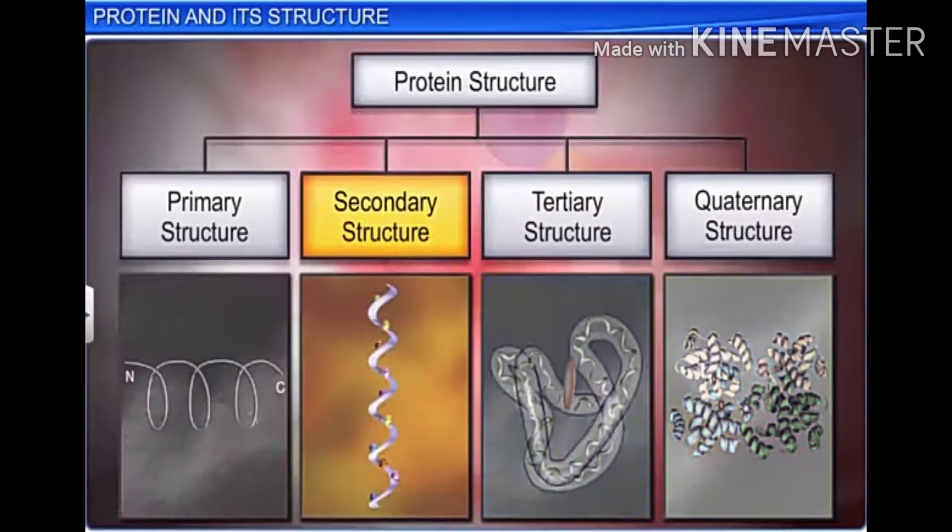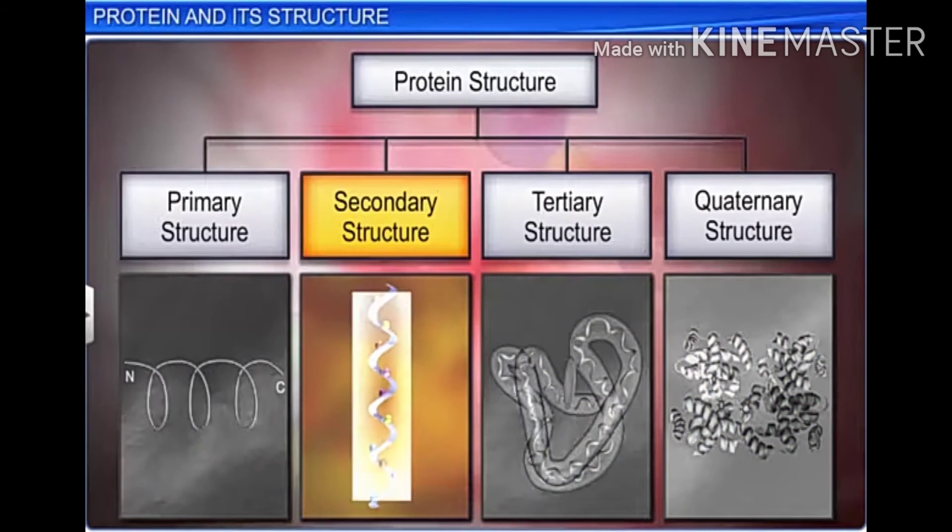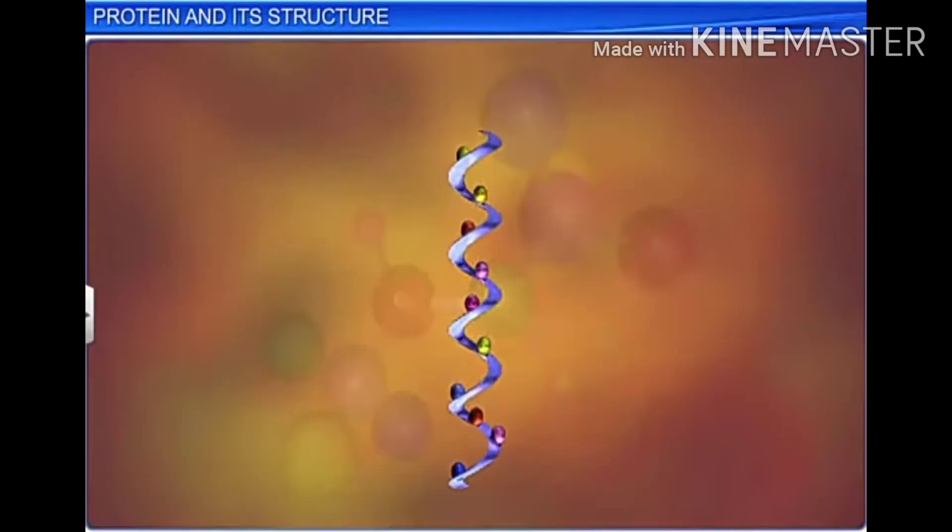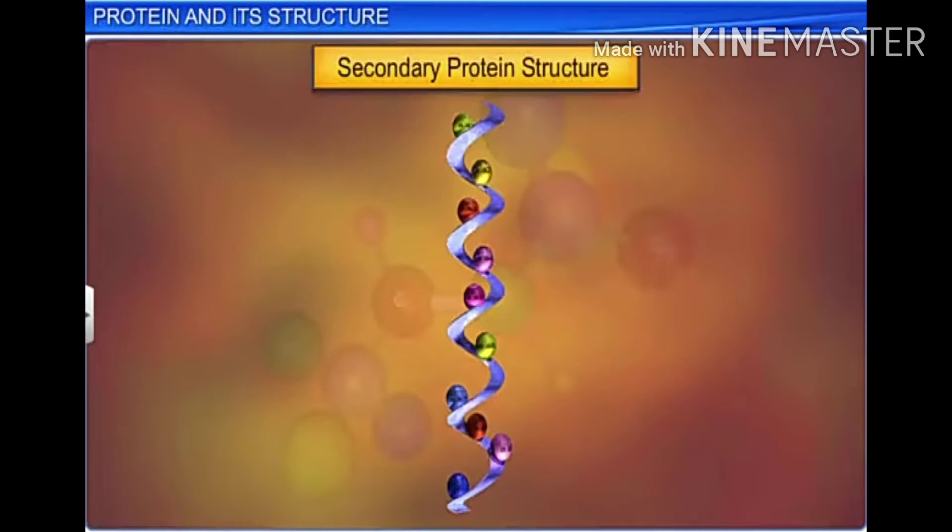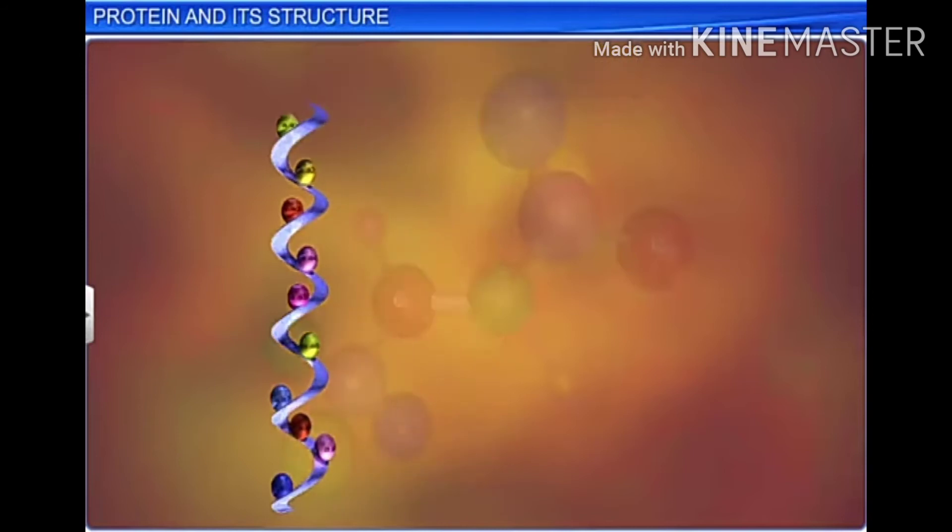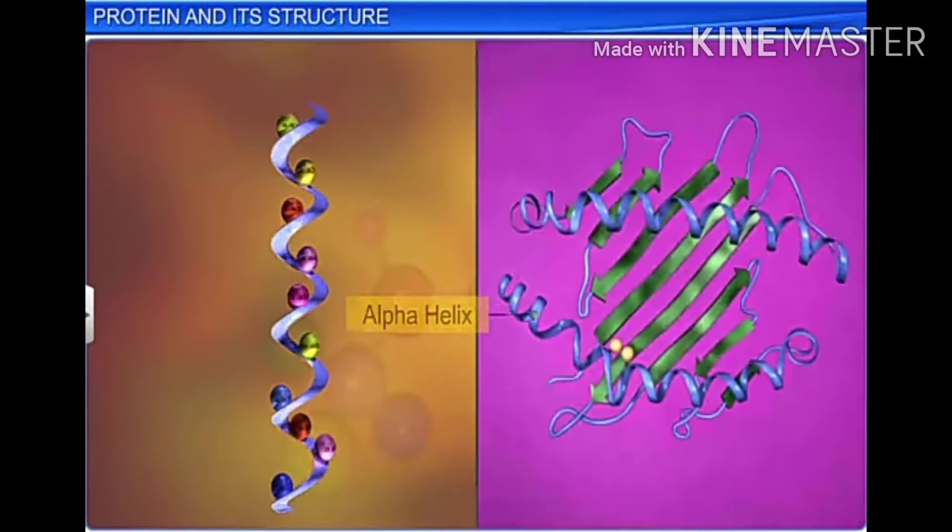In the secondary structure, amino acid links get longer, and due to the heaviness of the molecule, it tends to bend. This preliminary bending is considered to be the secondary structure. It is either an alpha helix or beta sheets.